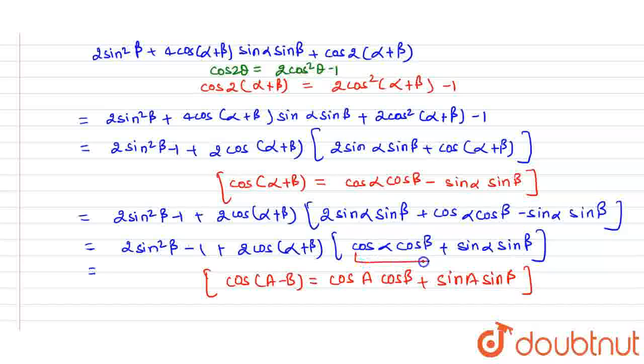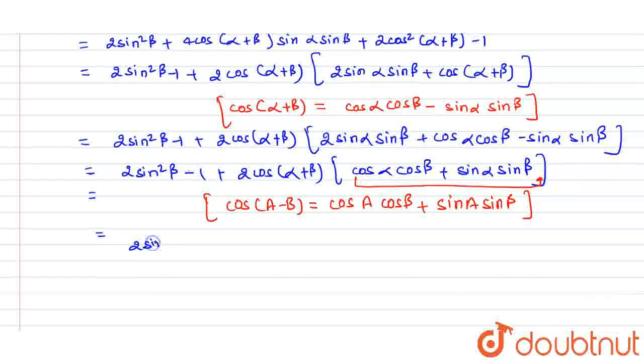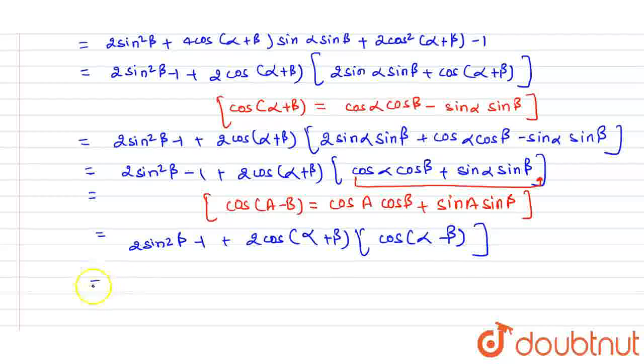At the place of this complete term, we can write 2sin²β - 1 + 2cos(α+β)cos(α-β).